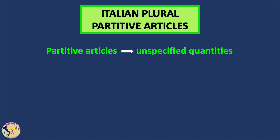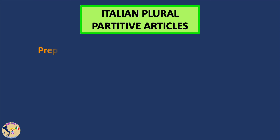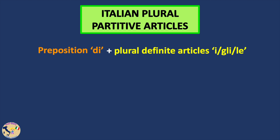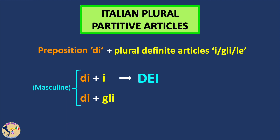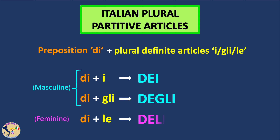To make up for the lack of plural indefinite articles, we use partitive articles. Partitive articles are used to indicate unspecified or generic quantities. Plural partitive articles result from the combination of preposition di with plural definite articles i, gli, or le. There are two masculine plural partitive articles in Italian, and one plural feminine partitive article: delle, formed from di plus le.